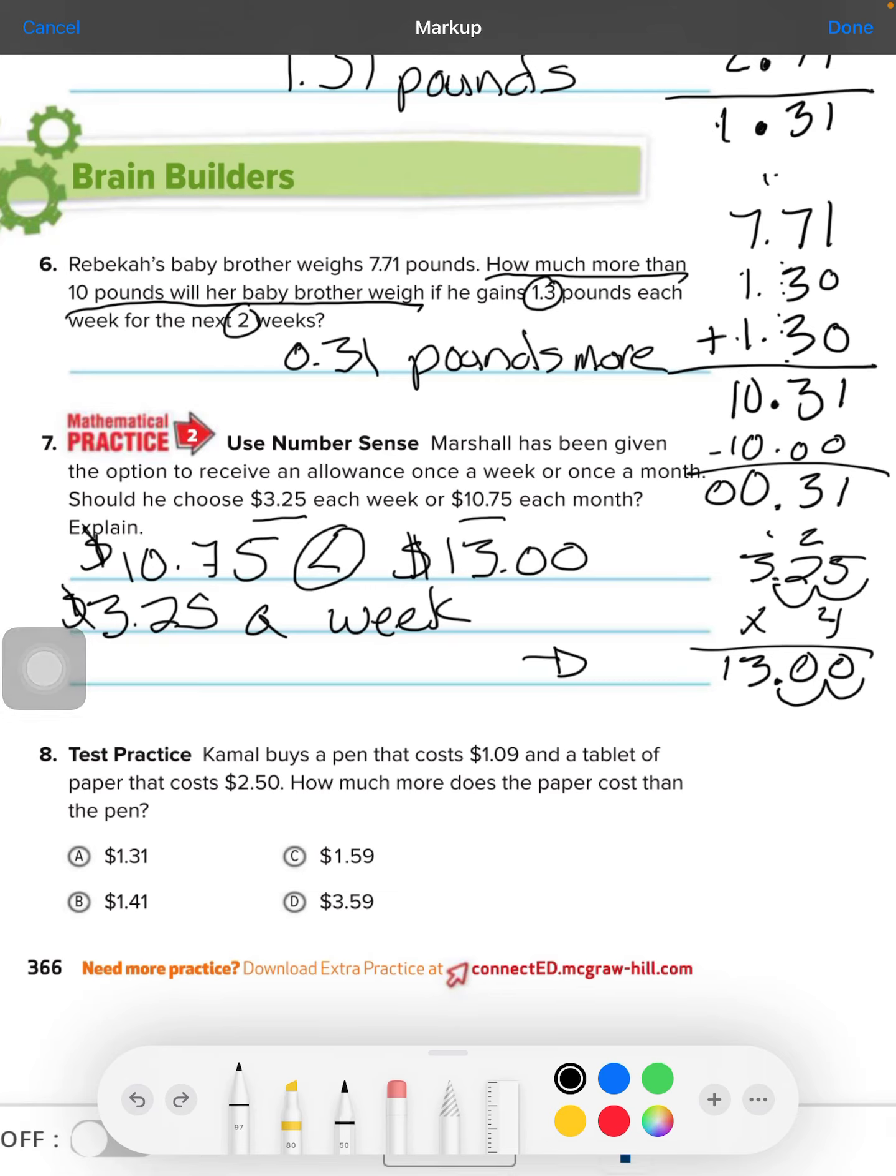So, number 8, Camille buys a pen that costs $1.09 and a tablet of paper that costs $2.50. How much more does the paper cost than the pen? So, they're doing a subtraction problem. We're finding the difference between the padded paper and then the pen. We cannot take 9 from 0. So, we're going to have to borrow and regroup. That'll be 4. This will be 10. 10 minus 9 is 1. 4 minus 0 is 4. 2 minus 1 is 1. So, we have $1.41. I can see that answer right there.